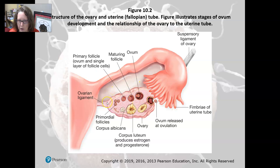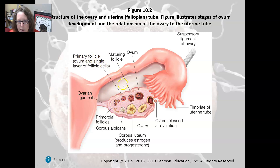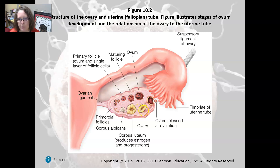Here is a representation of an ovary. In each ovary there are follicles at different stages of maturation, with one maturing every 28 days. We have many primary follicles that mature under the influence of estrogen into a maturing follicle with a developing ovum. The ovum is then released, and what is left behind turns into the corpus luteum, which produces progesterone and estrogen. The progesterone helps maintain an early pregnancy if fertilization occurs. If there is no pregnancy, it turns into the corpus albicans, and the cycle repeats every 28 days.